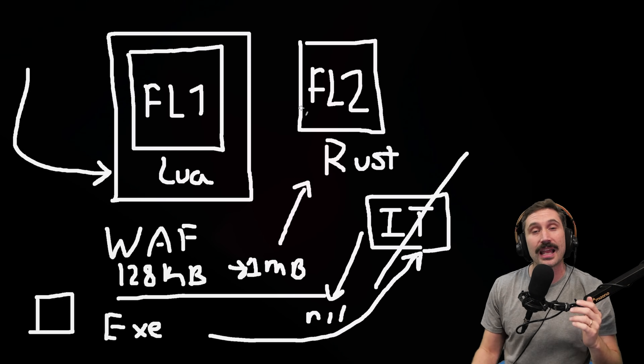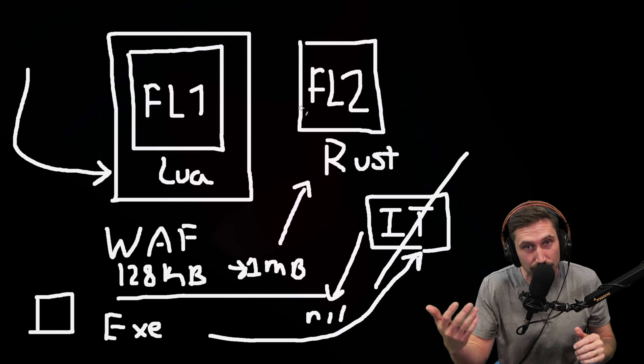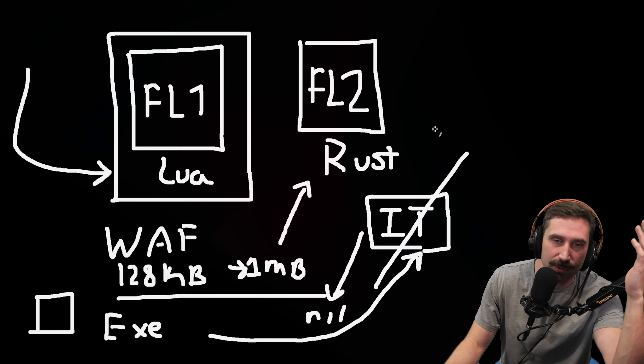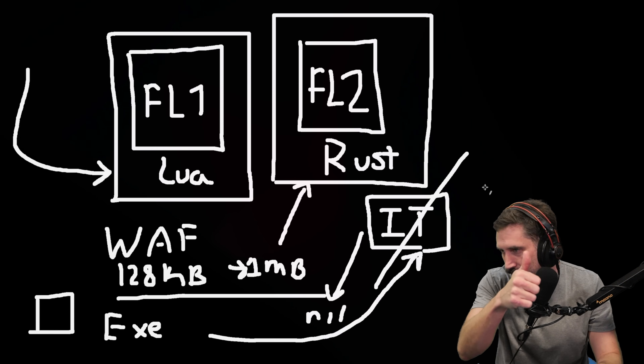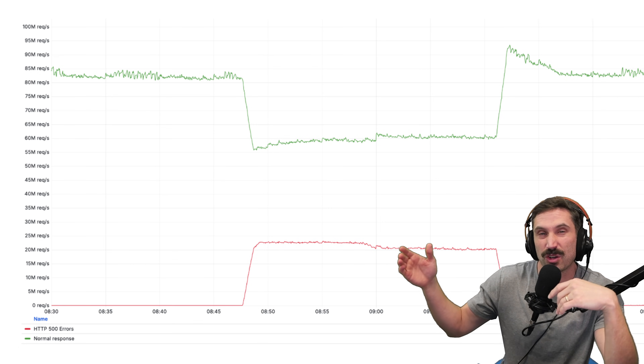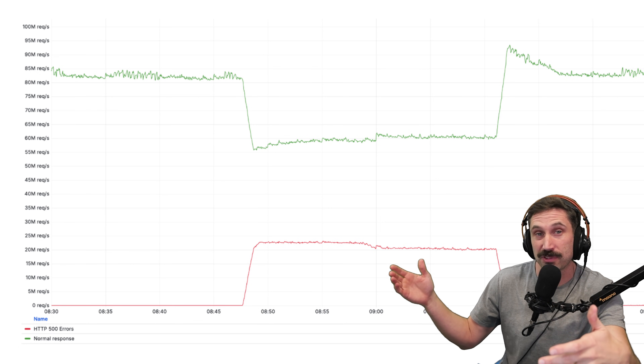First off, you're probably thinking the same thing I am — what? This was written in Lua? Yeah, I actually had no idea. Cloudflare, you write your FL1 in Lua? That's incredible. Second off, FL2 — obviously the new upgraded version written in Rust — it didn't have a problem, so congrats to Rust. The outage from Cloudflare was taking out around 22 to 25 million requests per second, all 500ing. That's a ton of requests — a decent portion of the internet was just experiencing issues.